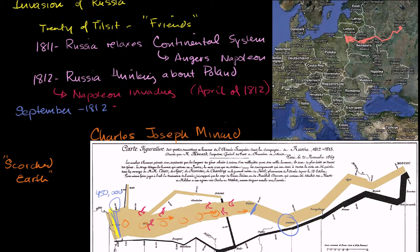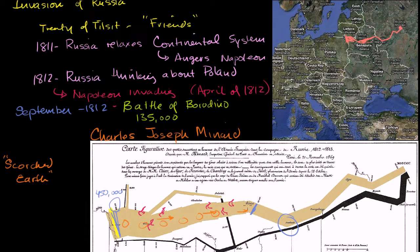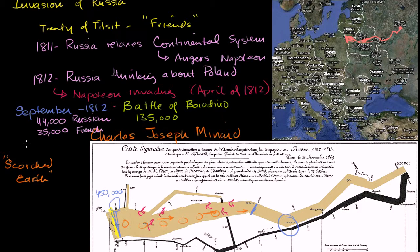At the Battle of Borodino in September of 1812, Napoleon only had 135,000 of his original 450,000 men. The rest had to be left behind to guard the supply route, or they deserted because they were getting hungry, or they were lost in minor skirmishes along the way. After a long, protracted, super bloody battle, there were 44,000 Russian casualties — mostly dead, but also wounded or captured — and 35,000 French casualties. Many historians think this was the most bloody single day of battle up to that point in history. The French were victorious.